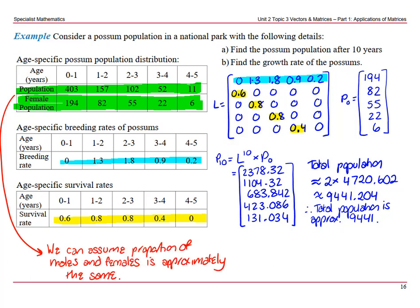Now part B was find the growth rate of the possums. So we need our eigenvalue of our L. Let's go into our calculators. Our positive dominant lambda is approximately 1.29. Therefore growth rate is approximately 29%.